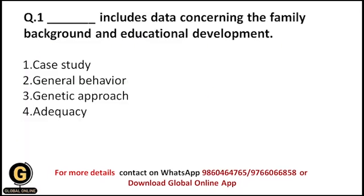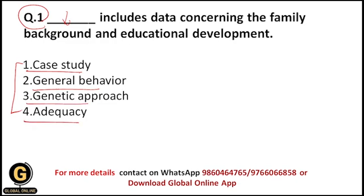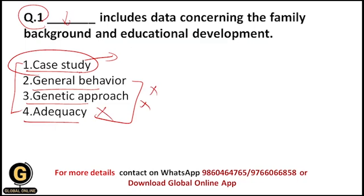Question one: which method includes data concerning family background and educational development? The options are case study, general behavior, genetic approach, and adequacy. Looking at these options, only case study is a research method or data collection method. All other options get eliminated, so the correct answer is case study.